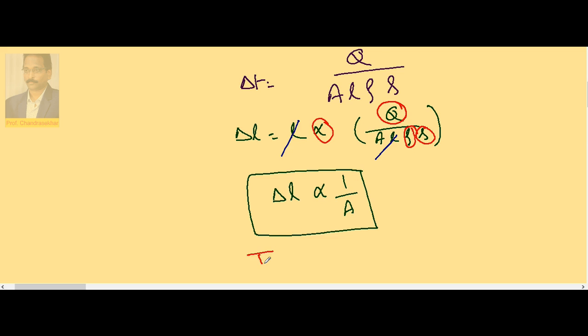That means the thin rod expands more. More expansion is for the thin rod because delta L is inversely proportional to area.